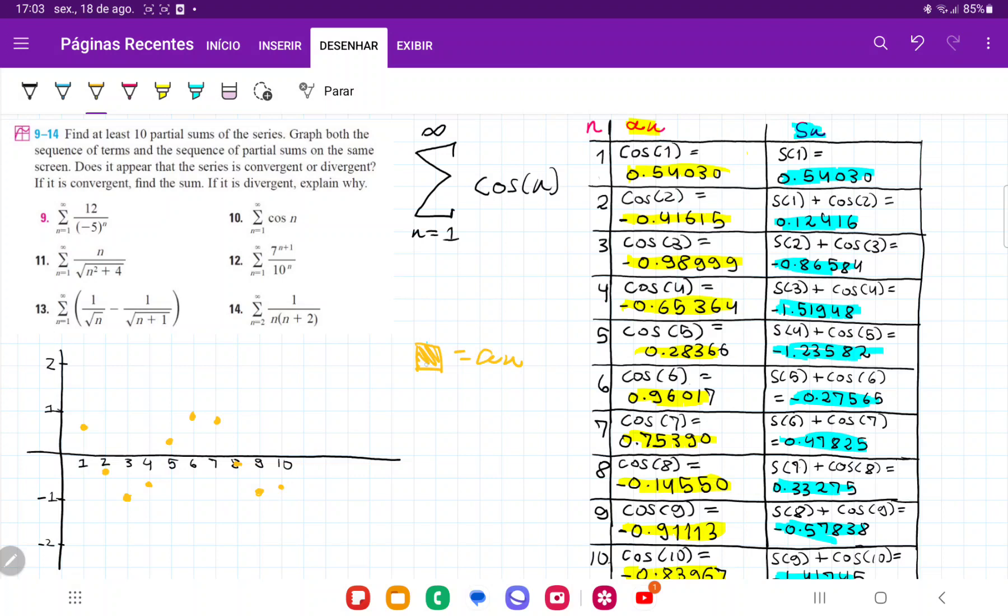And we have graphed our an. And so now let's graph our sum. So this one here is going to be our sn. That is going to be our sn.